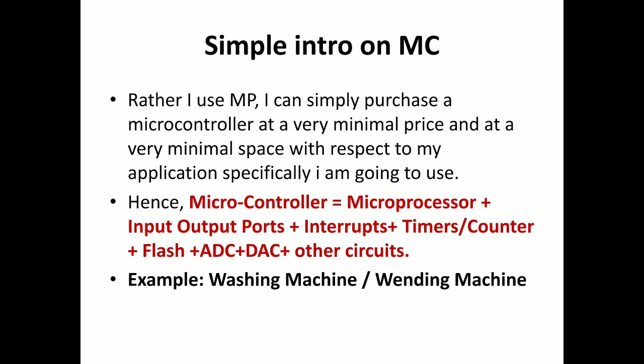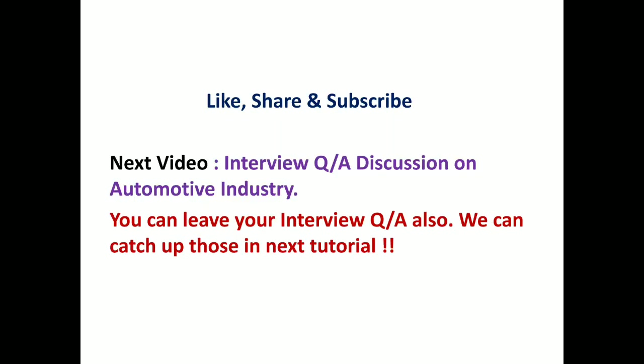To give two short statements: a microprocessor is a single chip containing an ALU, logic circuit, and registers. A microcontroller contains a microprocessor plus RAM, ROM, other ports, and peripherals. The second statement is that a microprocessor is generic — you can do many applications with it — whereas a microcontroller is designed for specific applications.